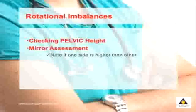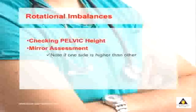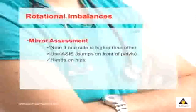The first test is very simple — all you're doing is looking at your pelvic height. Look in a mirror and note if one side of your pelvis is higher than the other. There are two landmarks you can use: the first is the ASIS, which are the bumps on the front of your pelvis, or alternately you can just place your hands on top of your hips. One side being higher than the other creates what's called a rotational imbalance.